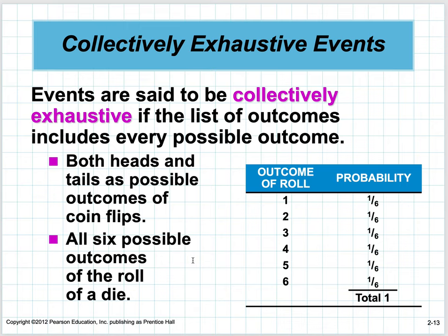For the roll of a fair die, the outcomes are 1, 2, 3, 4, 5, 6. Each occurs equally — you can roll a 1 one way out of six different outcomes, a 2 one way out of six. So each is 1/6, and they add up to a total of 1.